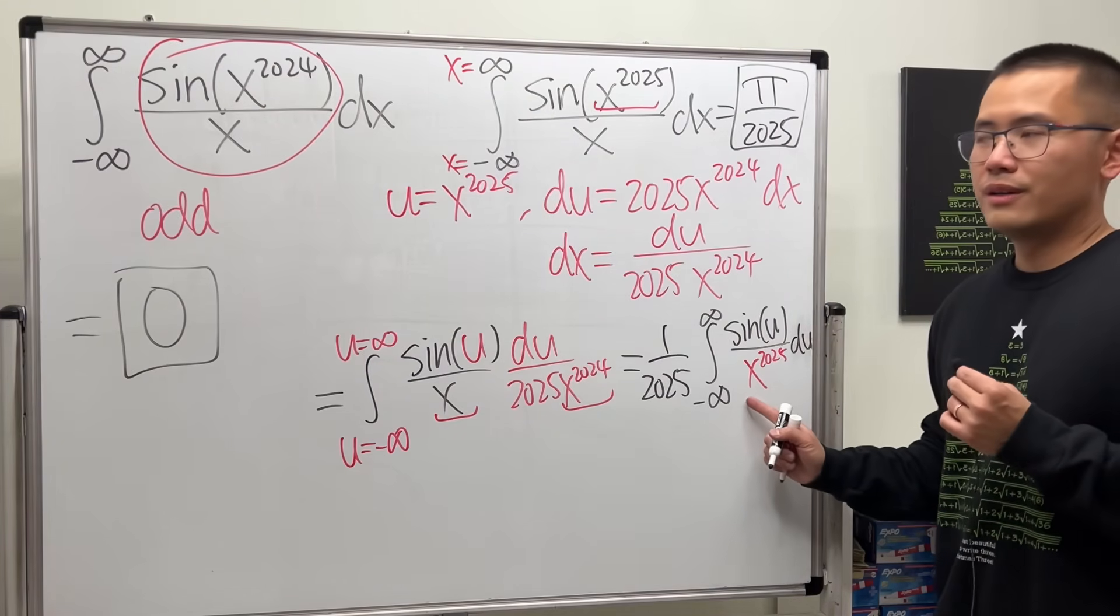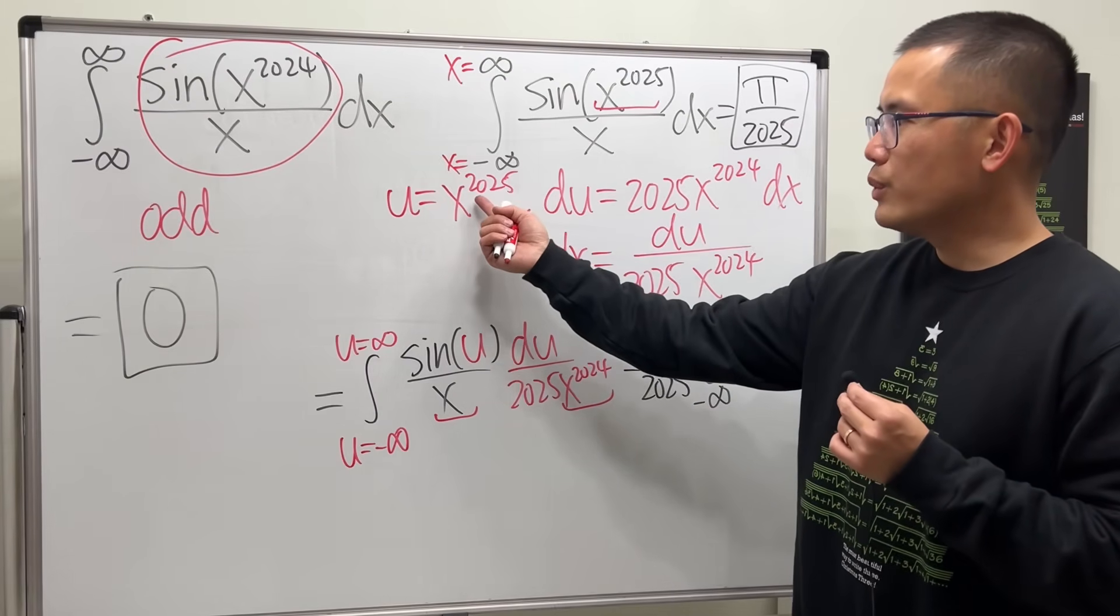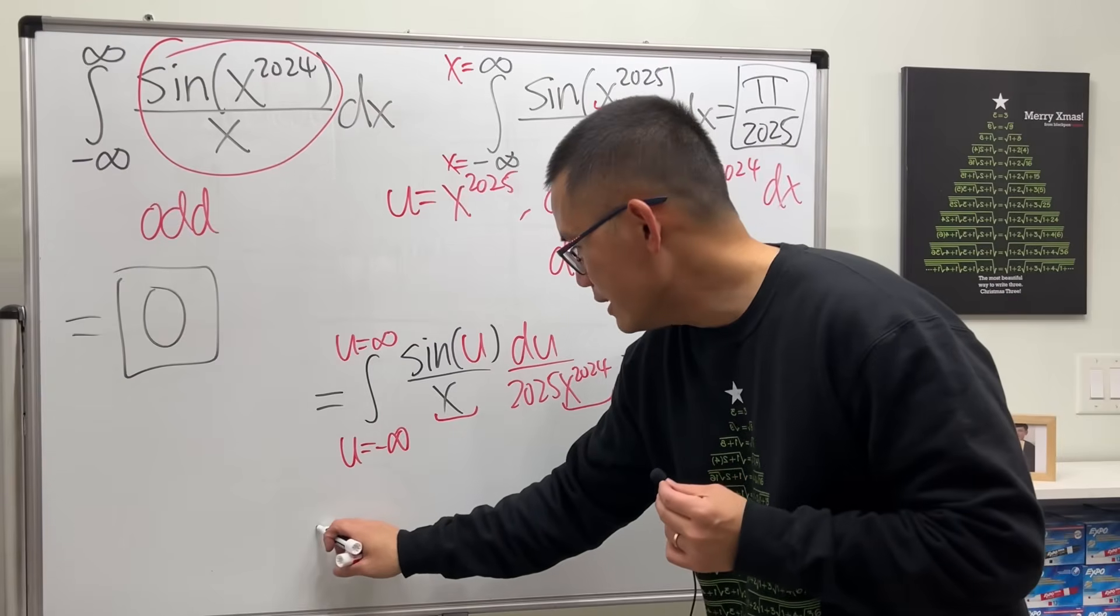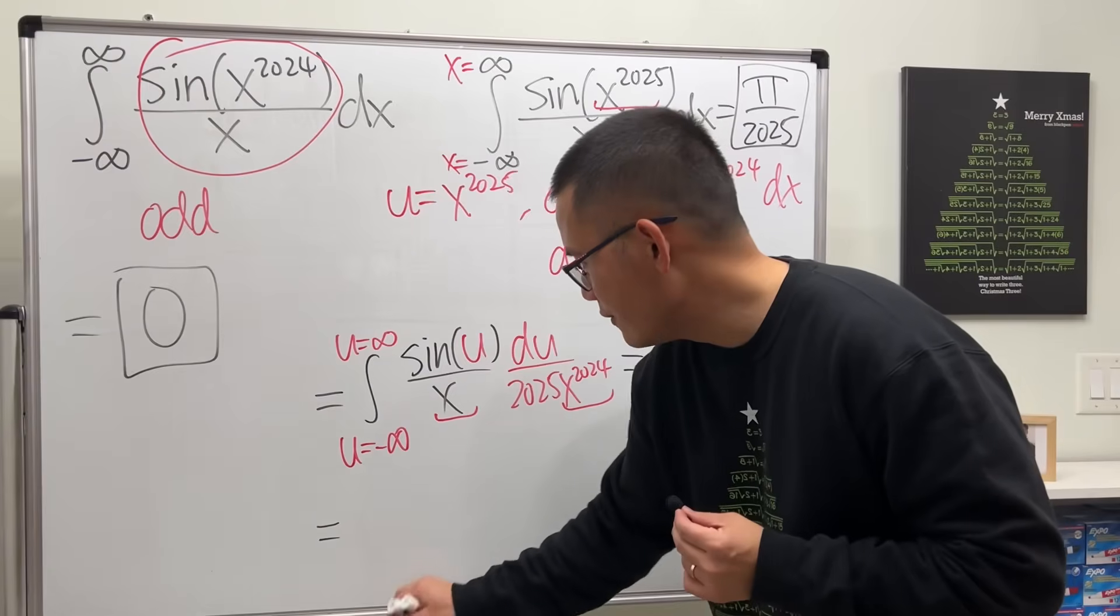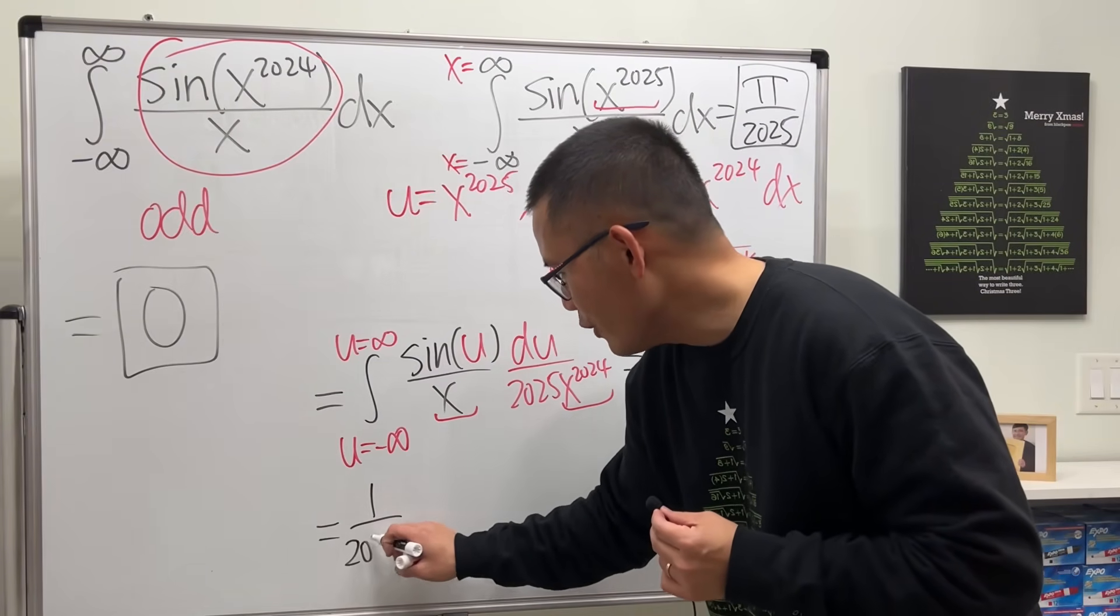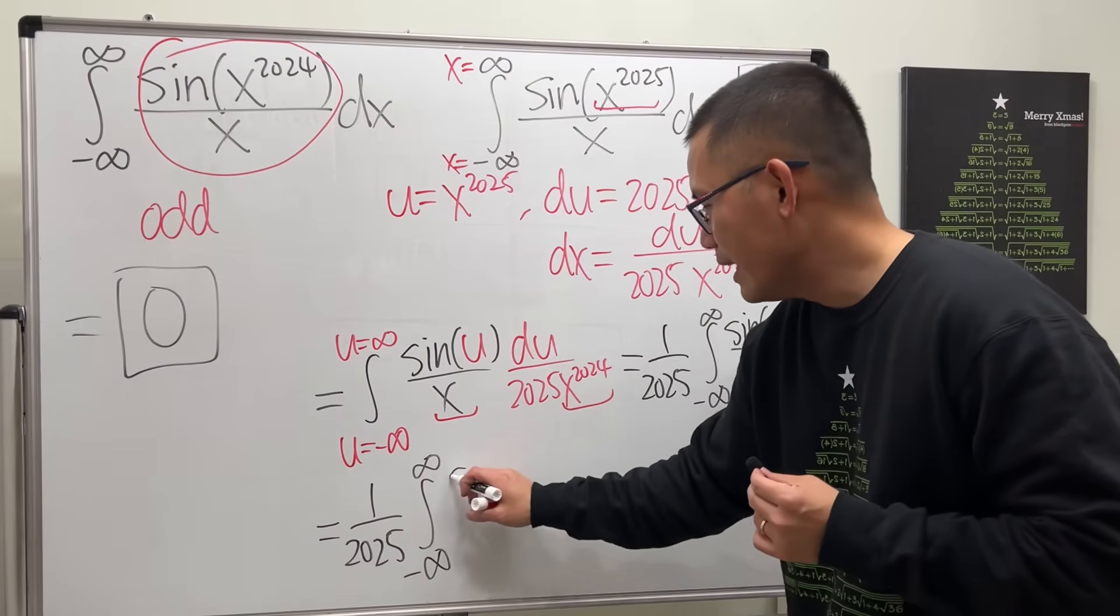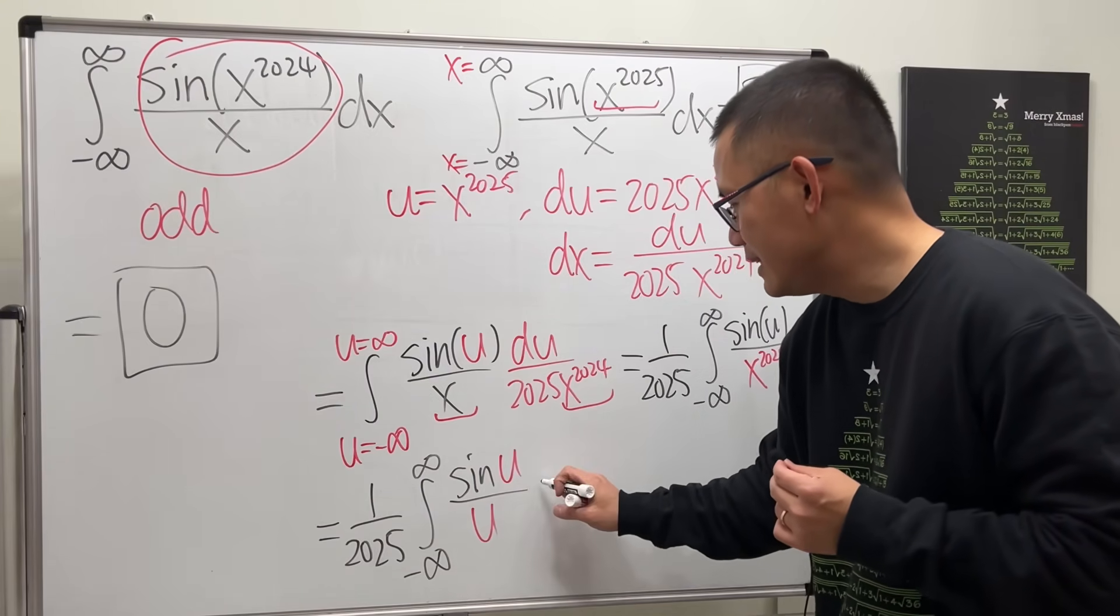So what should we do with this though? Well, don't worry. Have a look back here. u is equal to x to the 2025. So all in all, this right here, we have the integral, of course, with the 1 over 2025 in the front. 1 over 2025 in the front, and the integral, negative infinity to positive infinity. And we just have sine u over u du.